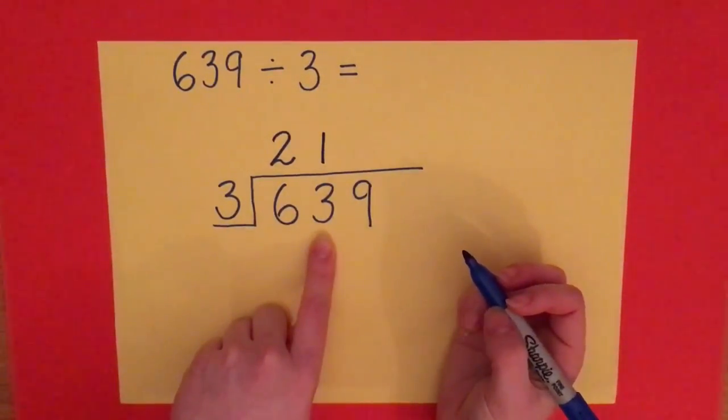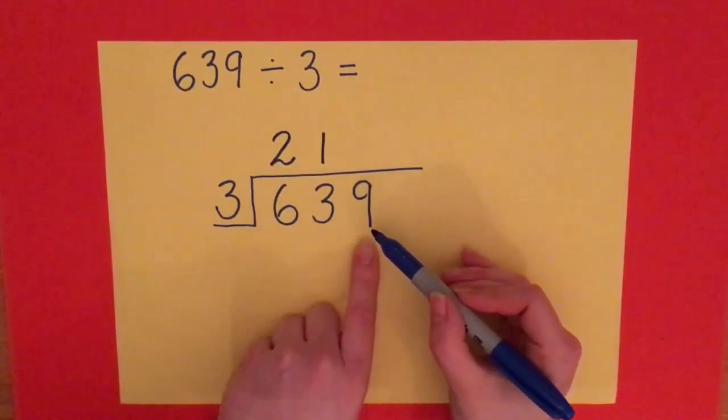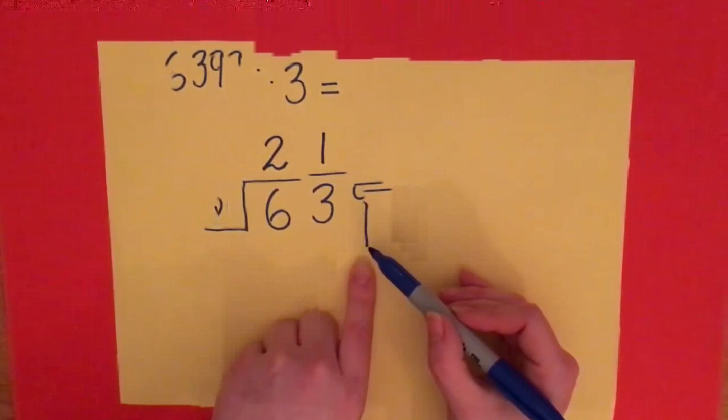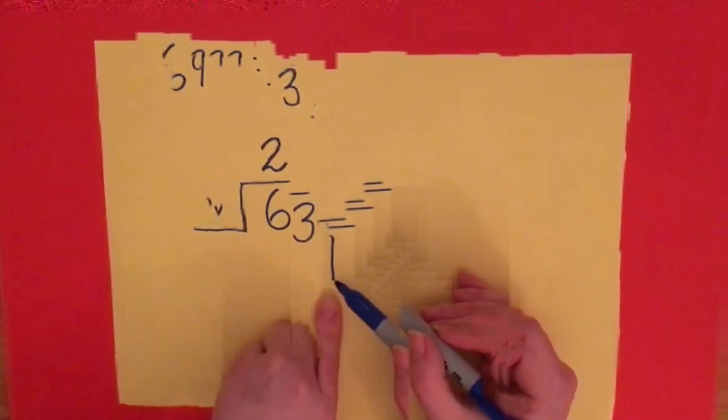I'm moving on to my last digit: 3 times what makes 9? We're using my 3 times table. I know 3 times 3 is 9, so the answer sits on top of the number, above the digit.